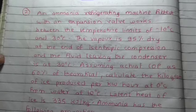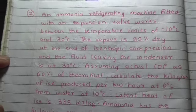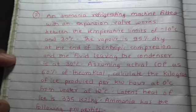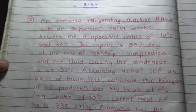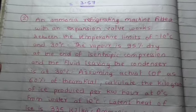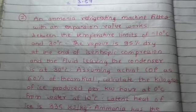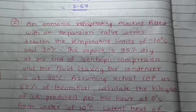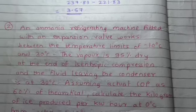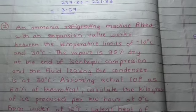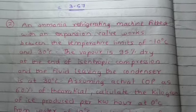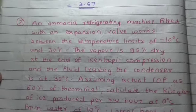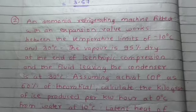Problem number two: theoretical vapor compression cycle with wet vapor after compression. The question is, an ammonia refrigerating machine fitted with an expansion valve works between the temperature limits of minus 10 degrees Celsius and 30 degrees Celsius.